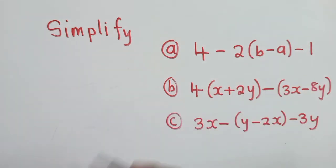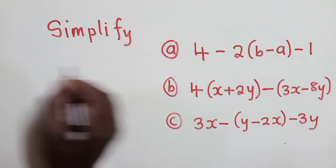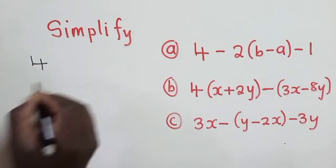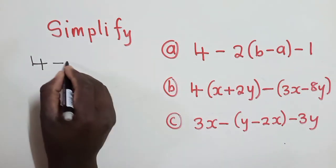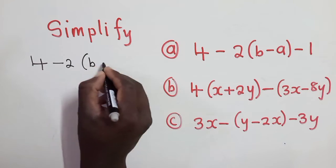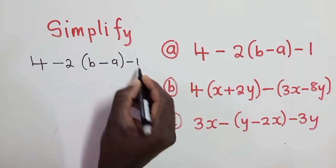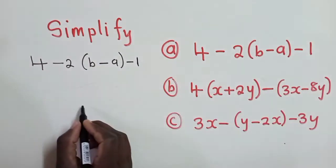Alright, so to simplify this, we get what we've been given. So we have 4 minus 2, open bracket, b minus a minus 1. So this is question A.